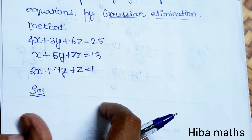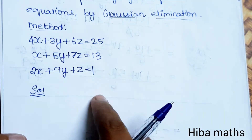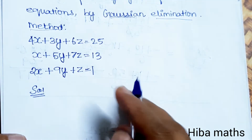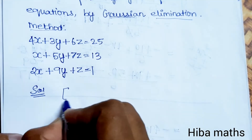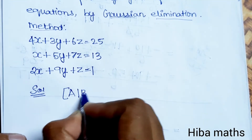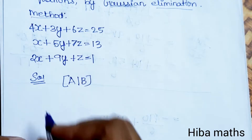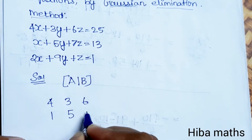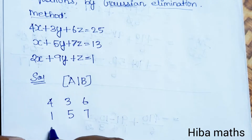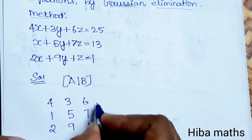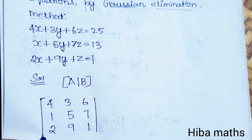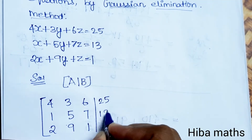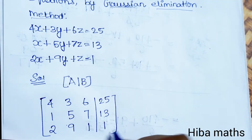The augmented form is: we write the coefficient matrix on the left side and the constants on the other side. So we have 4, 3, 6 | 1, 5, 7 | 2, 9, 1, and the constants 25, 13, 1. This is the augmented matrix form.